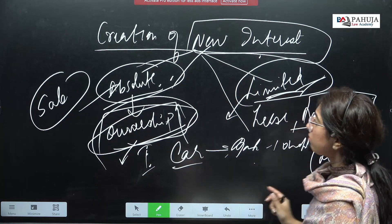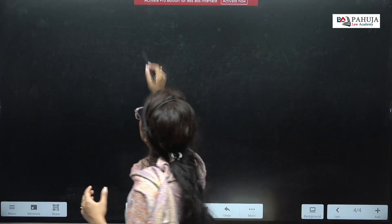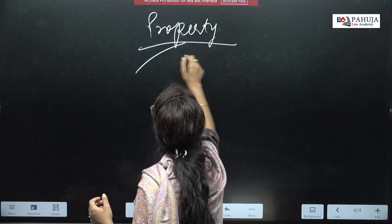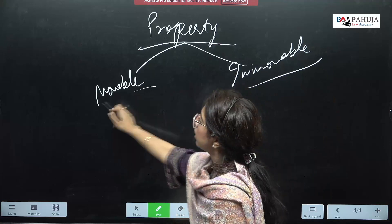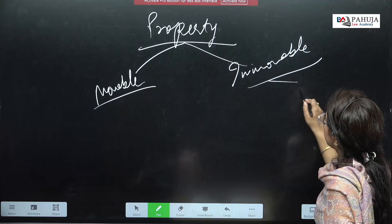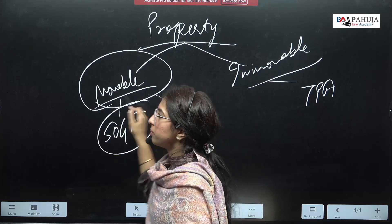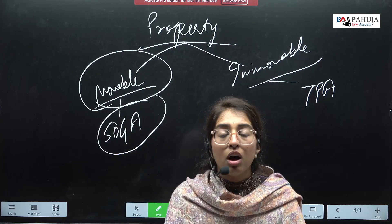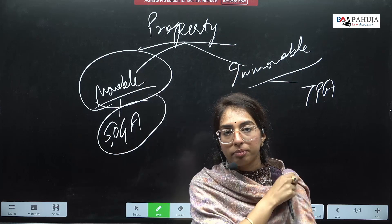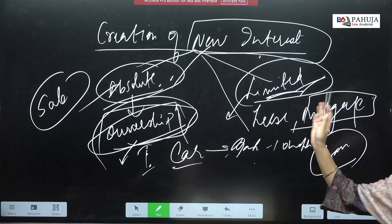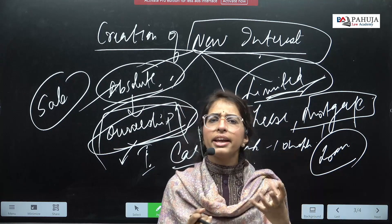Now, this creation of new interest will always be created in some property. So the next thing is property. We all know property is of two kinds: movable and immovable. Immovable property is dealt with under TPA, and in SOGA we only deal with movable property. That means in SOGA we only deal with movable property — immovable property is part of TPA. So in SOGA, creation of new interest will always be in movable property — a car, anything that is movable.